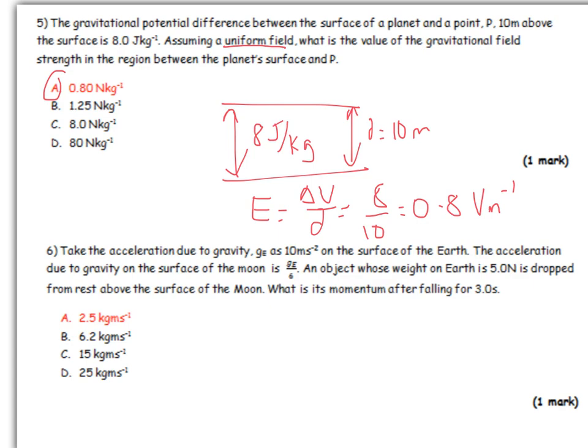We need to know what the acceleration is on the moon. We know it's g_E over 6, which is 10 divided by 6. We also know that on the moon there is no atmosphere, which means there's no air resistance, which means we can apply SUVAT equations. V equals U plus AT. If it starts from rest, V equals AT equals 10 over 6 times 3, which equals 5 meters per second.